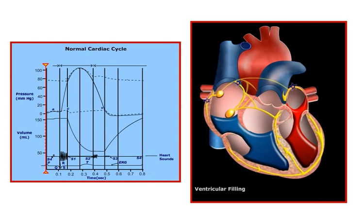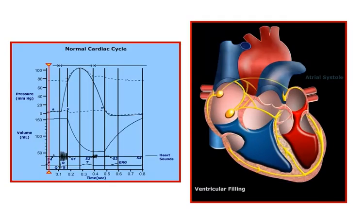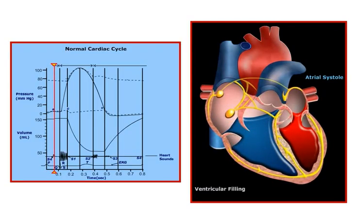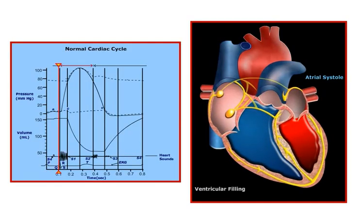As shown in the graph, at the end of diastole, the cardiac cycle begins with atrial contraction, or atrial systole. This is reflected by the P wave on the EKG, which represents electrical depolarization of the atria. Atrial contraction produces a small increase in venous pressure that is reflected by the A wave. This contraction also causes a rapid movement of blood across the atrioventricular, or AV valves, into the ventricles.